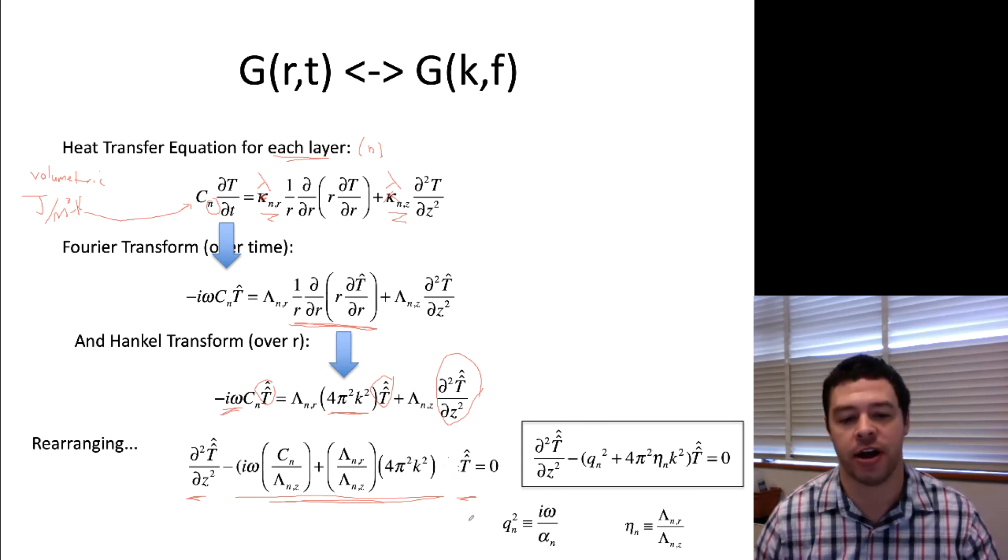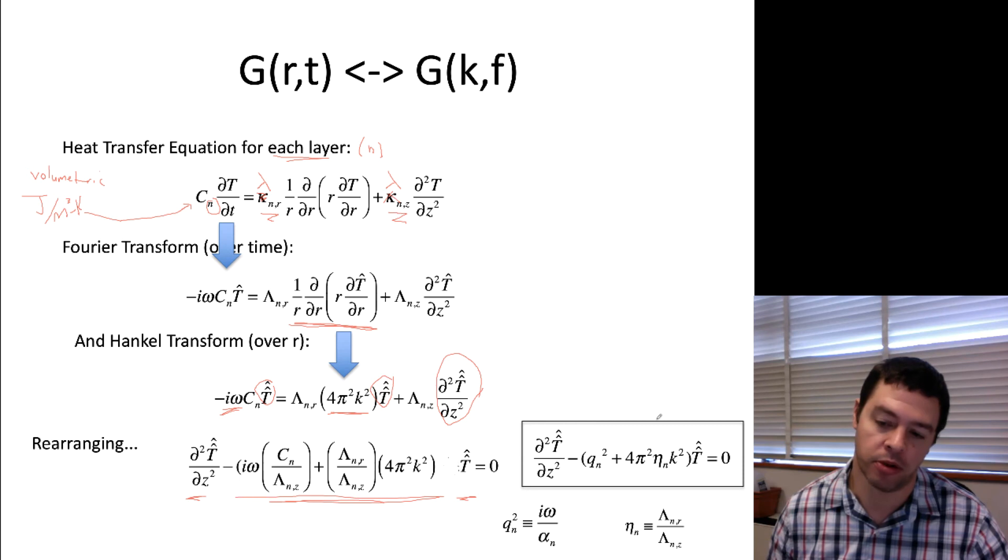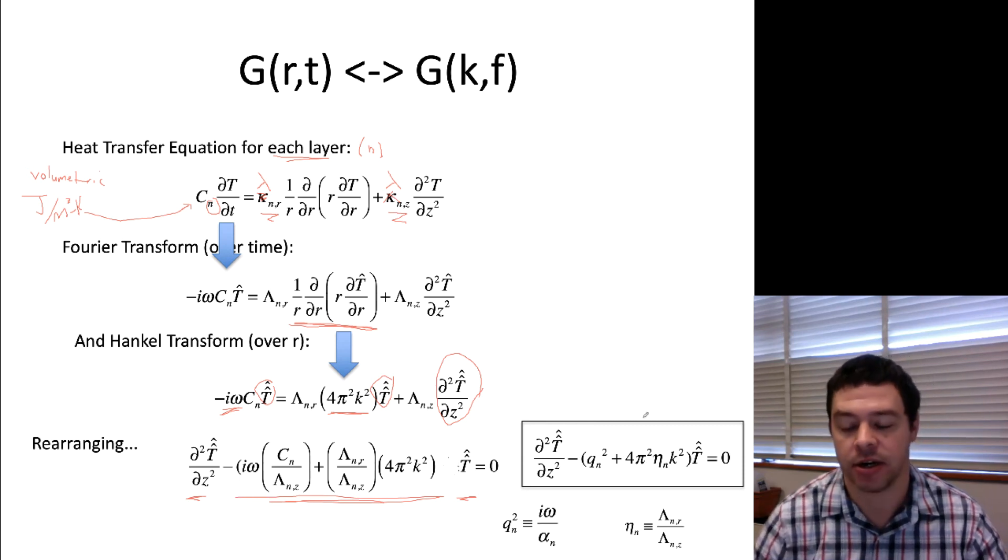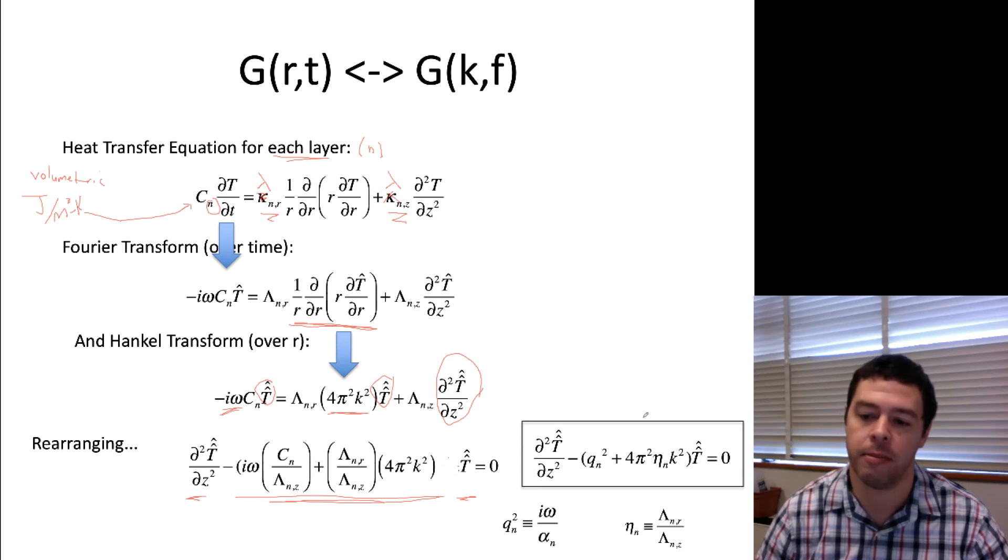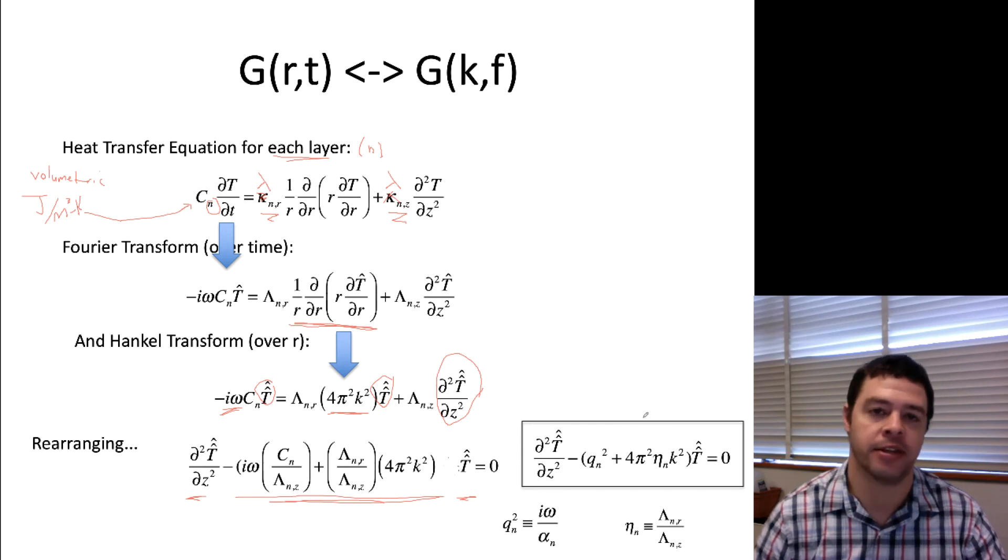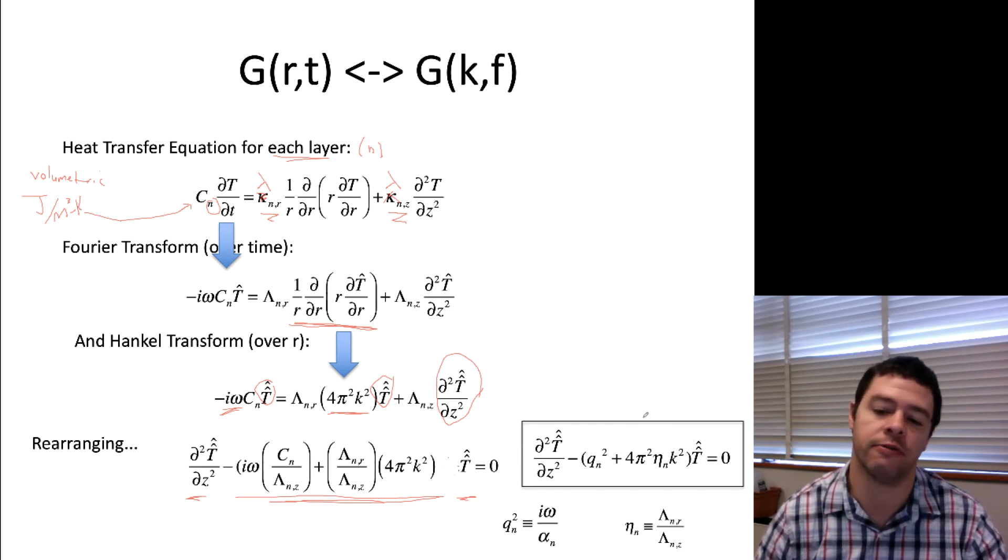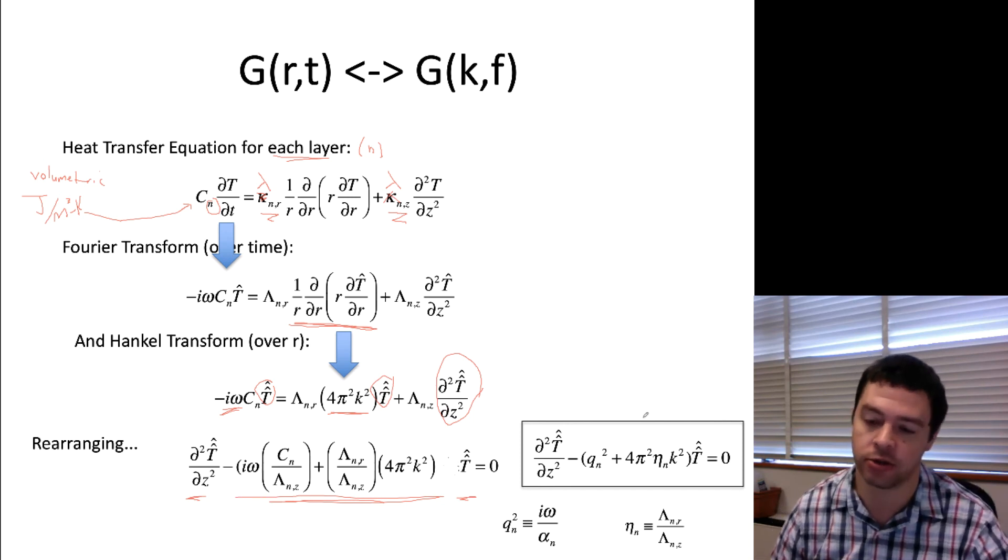But for the moment, let me just simplify that one step further and put the simplified expression in the box here. So, the second derivative of temperature, at least in the z direction, minus some constant prefactor times the temperature equals zero. That defines a second order ordinary differential equation that I can solve for the T-hat-hat, which was the Fourier and the Hankel transform of temperature.